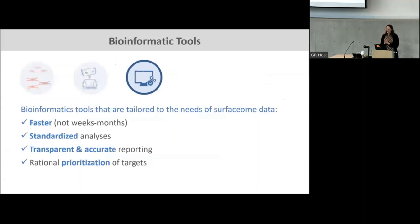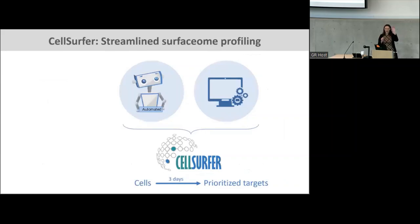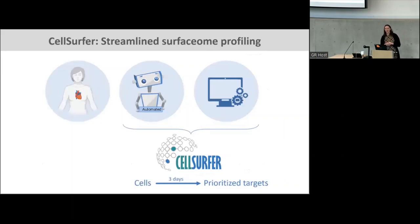The last thing we needed were some bioinformatic tools. Over the past five years, we've developed a number of different bioinformatic tools that allow us, in a transparent and standardized way, to process the data and rapidly prioritize targets so that we don't have to spend weeks to months analyzing the data. As soon as the data are collected, using our tools within a couple of hours we have a highly ranked prioritized list of candidates that help us distinguish failure versus non-failure, or disease states, or response to treatment. Combining the cell surface capture method with our bioinformatics tools is what we call the Cell Surfer Platform. We can start with cells on one day, and usually three to four days later we'll have a prioritized list of targets. This platform works for really any cell type from the human body.